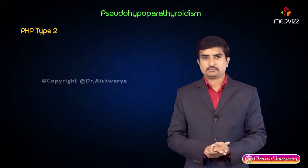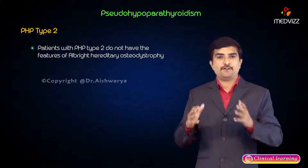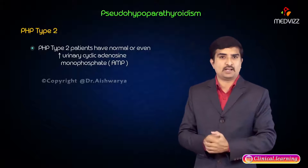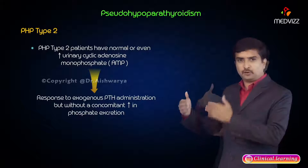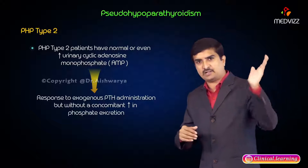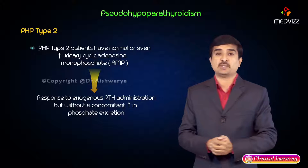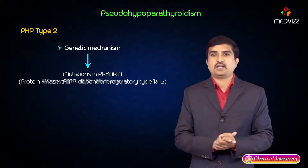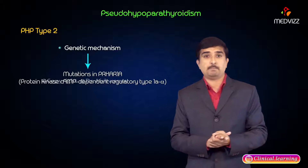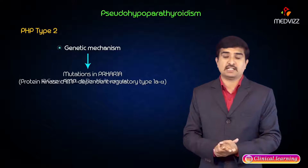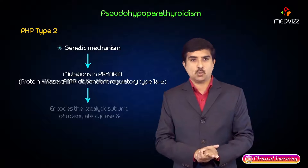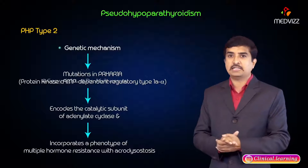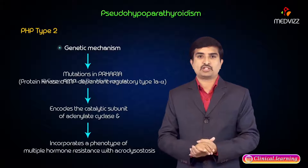PHP type 2 patients do not have features of Albright Hereditary Osteodystrophy. They have normal or even elevated urinary cAMP levels in response to exogenous PTH administration — a clear difference from type 1 — but without a concomitant increase in phosphate excretion. One documented genetic mechanism involves mutations of the PRKAR1A gene (protein kinase cAMP-dependent regulatory type 1-alpha), responsible for type 2. This gene encodes a catalytic subunit of adenylate cyclase and incorporates a phenotype of multiple hormone resistance with acrodysostosis.